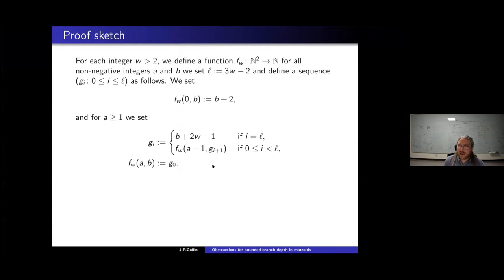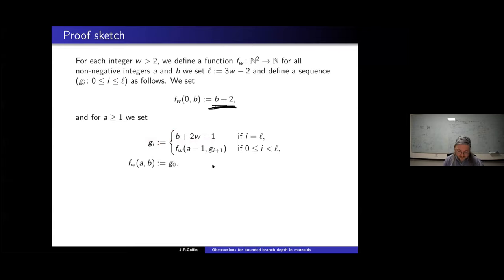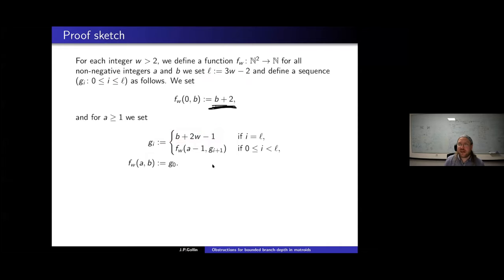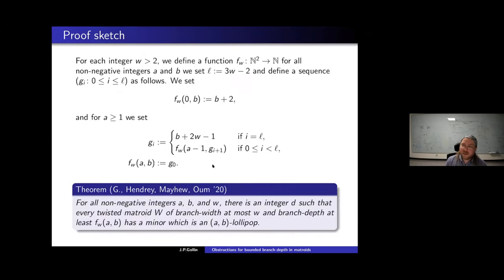Here is the function we get: the induction base was b+2. We iterate l = 3w−2 times, each step recursively defined by the previous value. The branch depth g_0 needed to prove the lollipop theorem is then determined by this recursive formula.